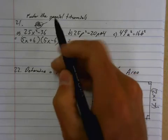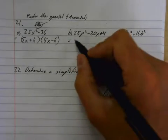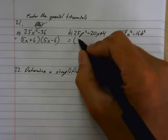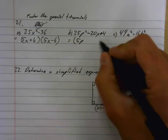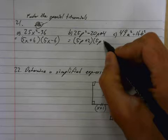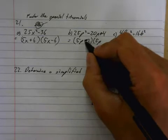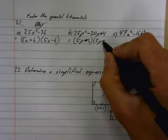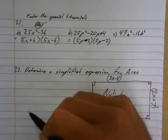Next one. Now, because it said factor the special trinomials, I know this is a special trinomial, so I know that this is going to be 5p plus 2 and 5p, whoops, not, these are both going to be minus in this case. They have to both be minus 2 in order to get that negative 20.